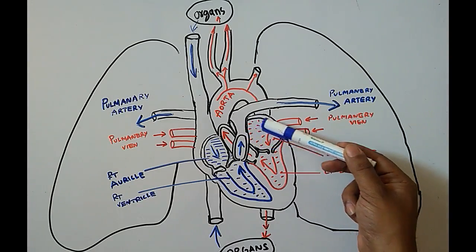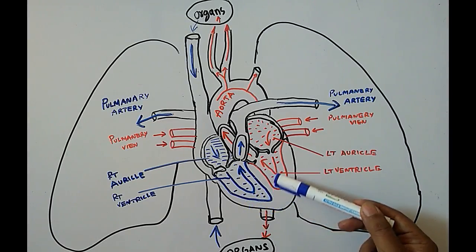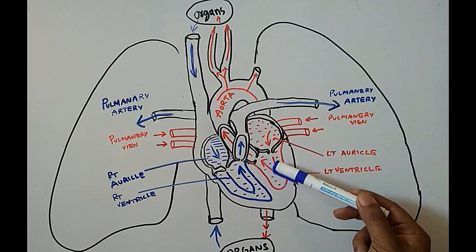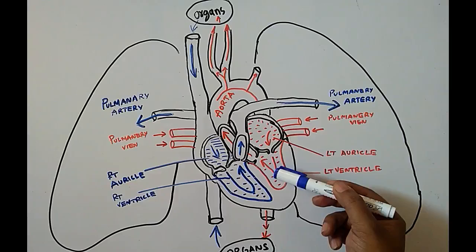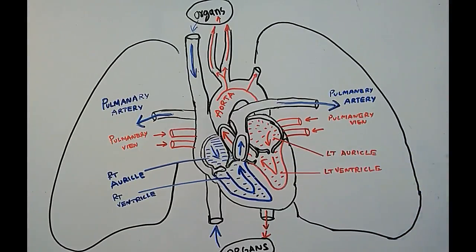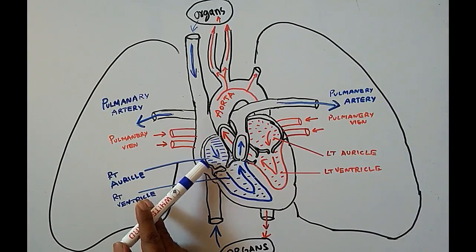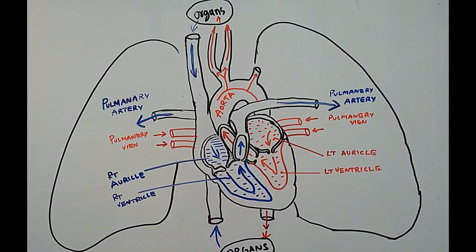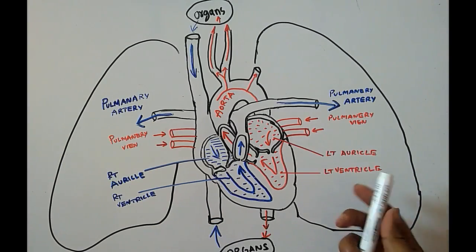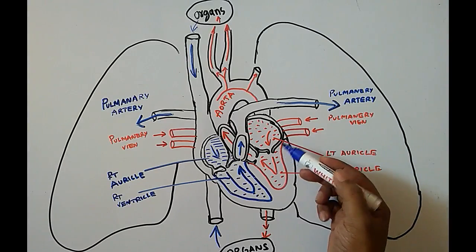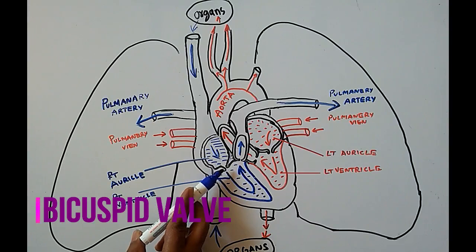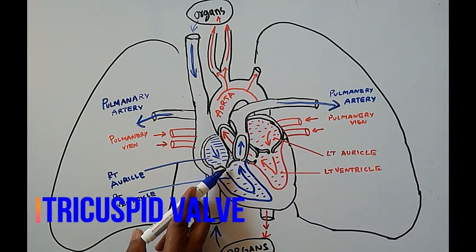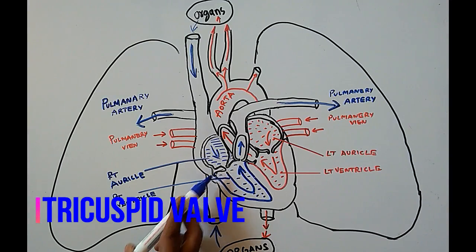The upper part of the heart is called the auricle and the lower part is called the ventricle. The left part of the heart contains the left auricle and left ventricle. The right part has the right auricle and right ventricle. Between the left auricle and left ventricle there is a bicuspid valve, and between the right auricle and right ventricle there is a tricuspid valve.